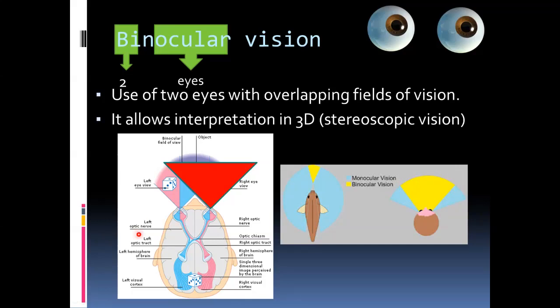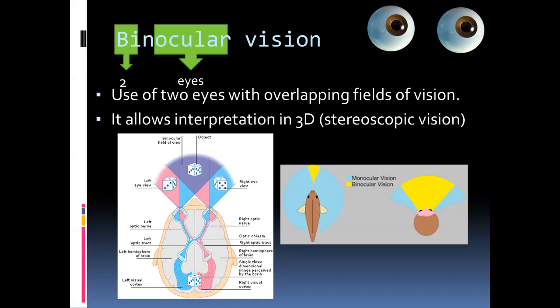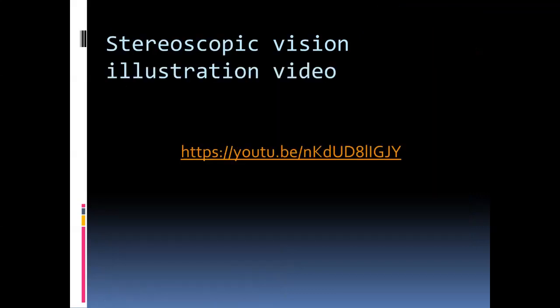Looking at this diagram, the red triangle represents the area visible with the right eye, the yellow triangle represents the area visible to the left eye, and the orange portion is the area of overlap — the area of binocular vision. Since each eye gives a slightly different view of the object, when we use binocular vision these two views are put together, allowing for what we call stereoscopic vision — vision in 3D. This video will explain that process in more detail.